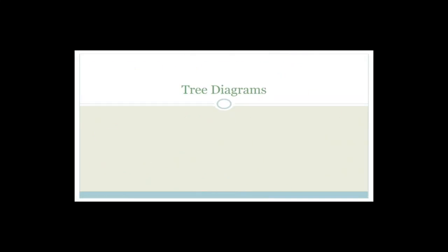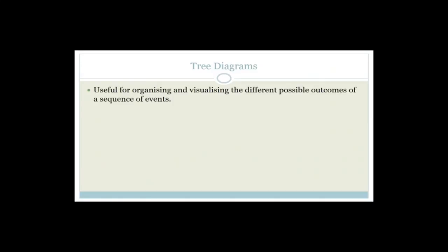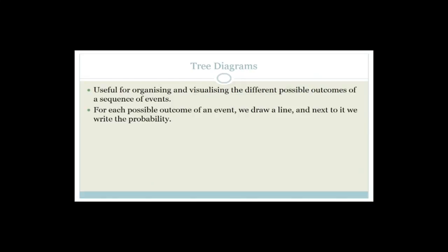Now we're going to talk about tree diagrams. This is useful for organizing and visualizing the different possible outcomes of a sequence of events. For each possible outcome of the event, we draw a line and write the probability next to it.